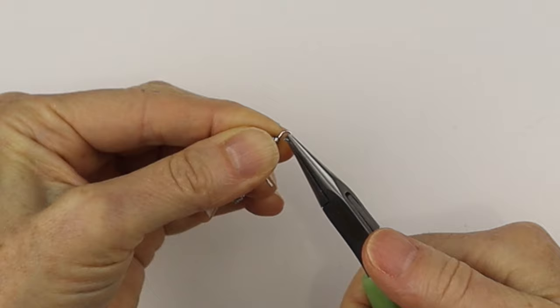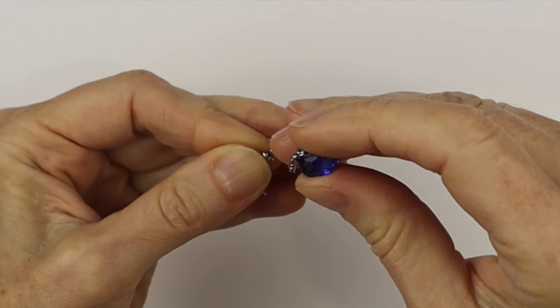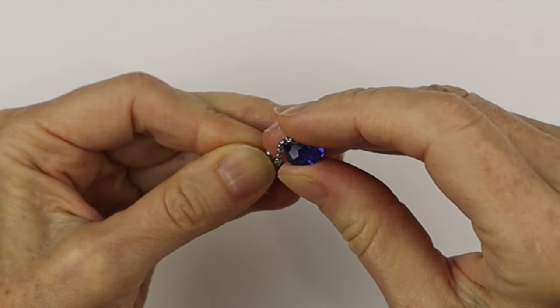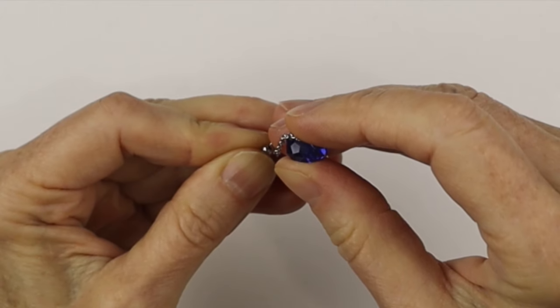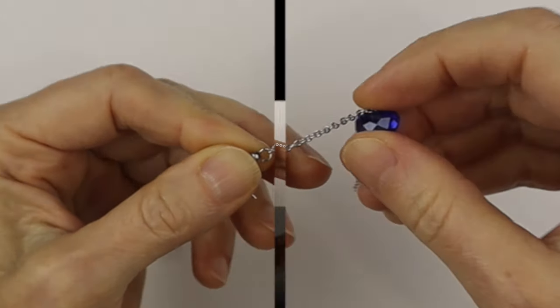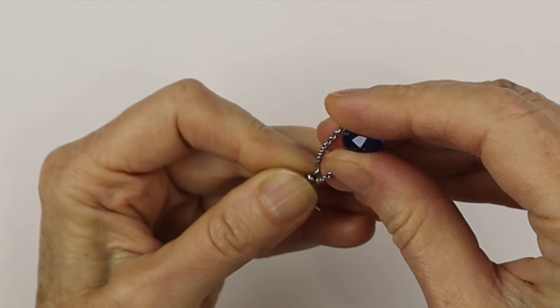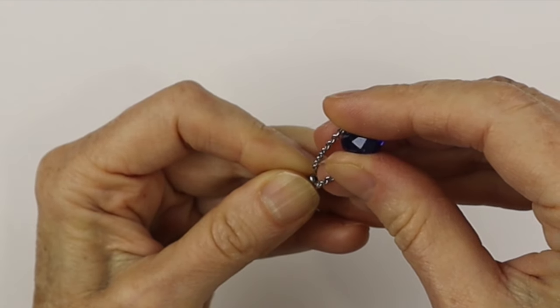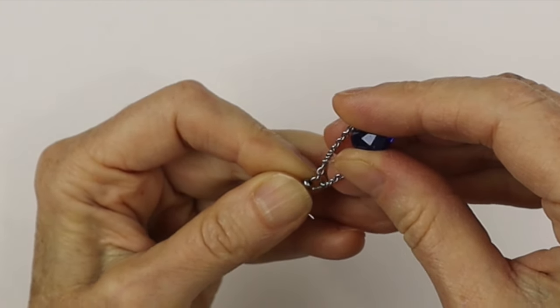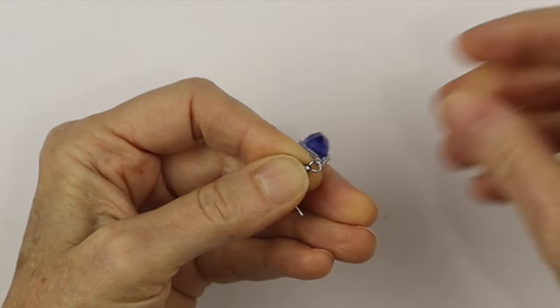And then we will put on one end of the chain directly on the hook, and then grab the other end and slide it on as well. The chain is a little bit fine, so it's a little tricky to get on there.